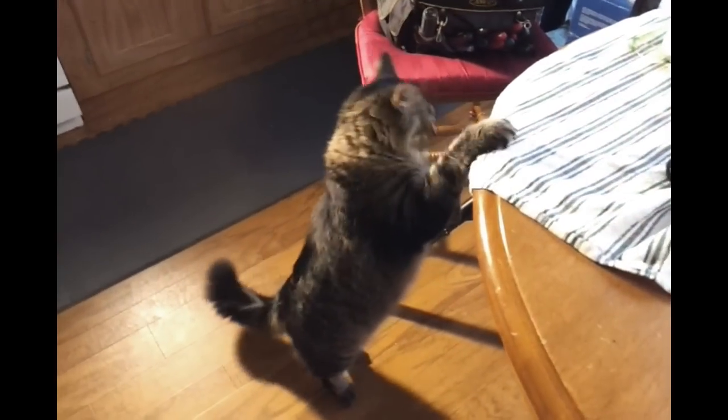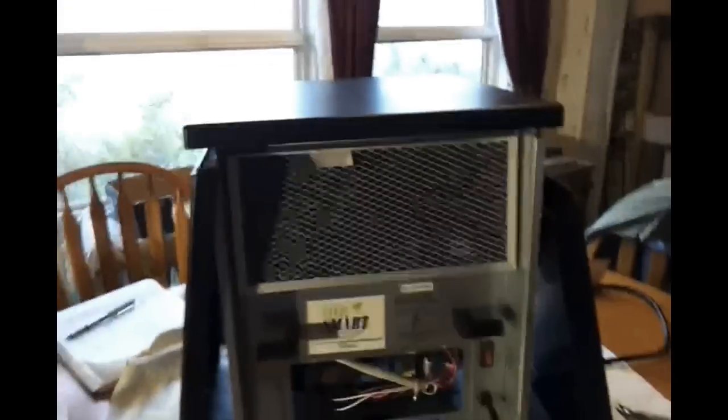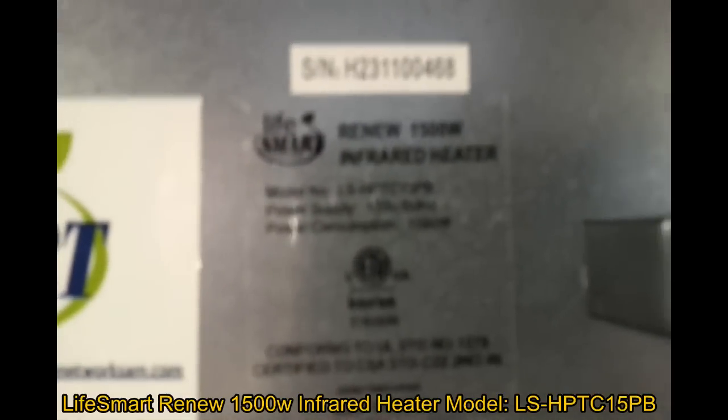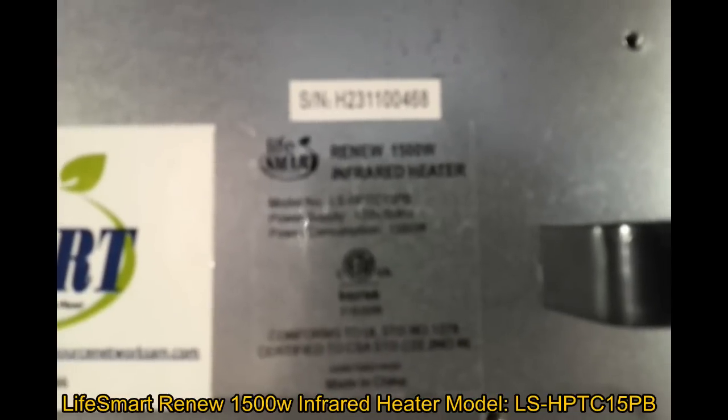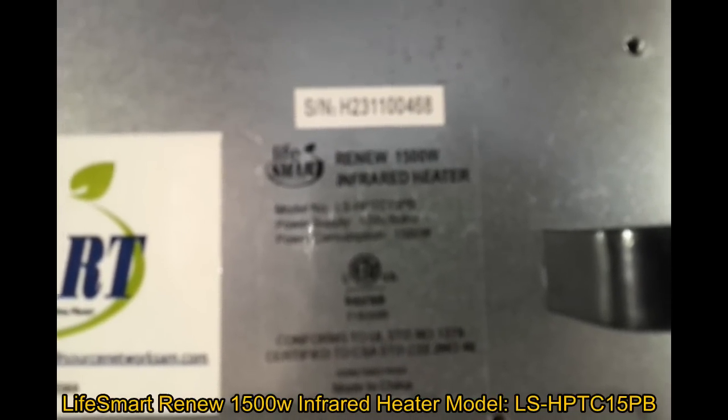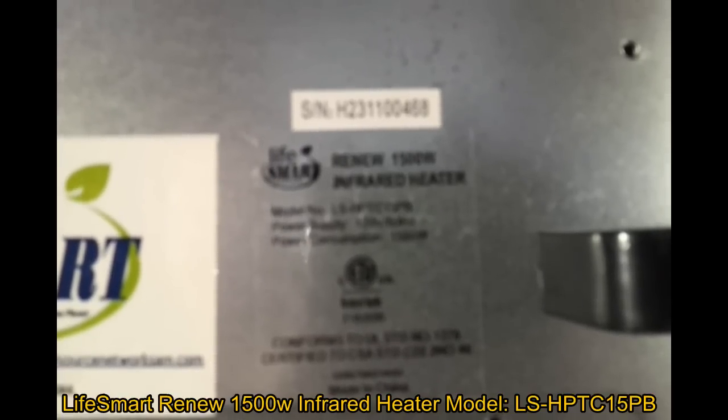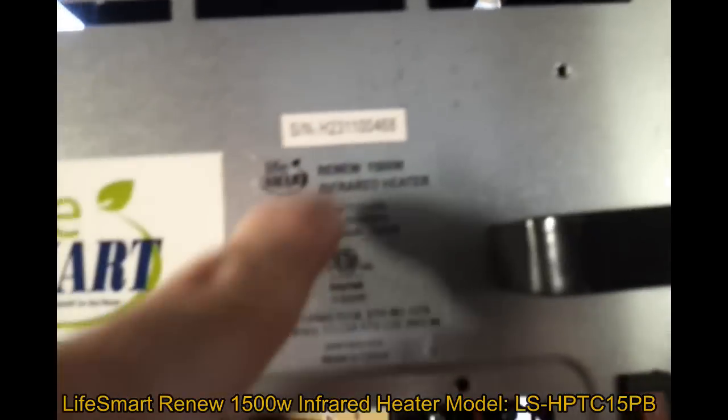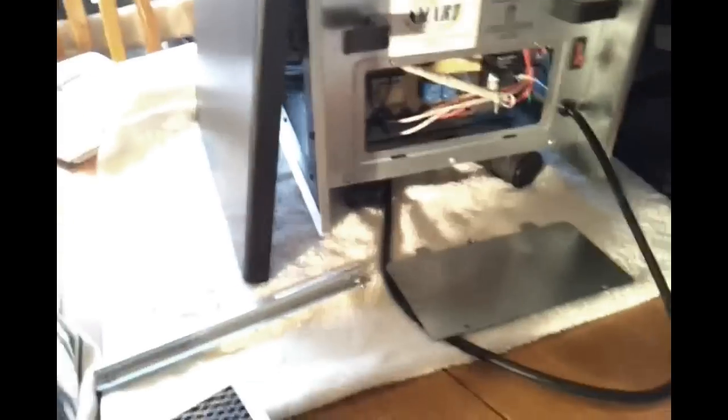So you can see it's a fairly nice-looking design and has a digital front on it. You can look in here, it has a nice coppery glow to it and kind of a fireplace little look to it. It has the filters in the back and a little clip that screws in down here. It is a thin foam-type filter. On the back it says Renew 1500 Watt, LifeSmart's a brand, model number LS-HPTC15PB. The HPTC will come in interesting here in a bit for identification reasons, and infrared heater clearly states there.